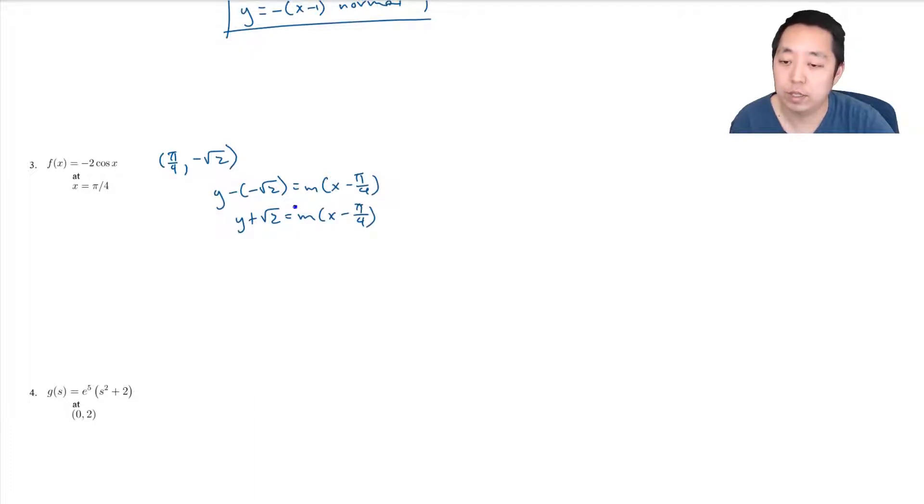To find the slope, I'm going to take the derivative. Derivative of cosine is negative sine, so this is negative 2 times negative sine x, which equals 2 sine x. So the derivative at the point pi over 4 is 2 sine of pi over 4. Sine of pi over 4 is also root 2 over 2, so this is root 2. For the tangent line, m is root 2, so I have y plus root 2 equals root 2 times (x minus pi over 4). That is my tangent line.